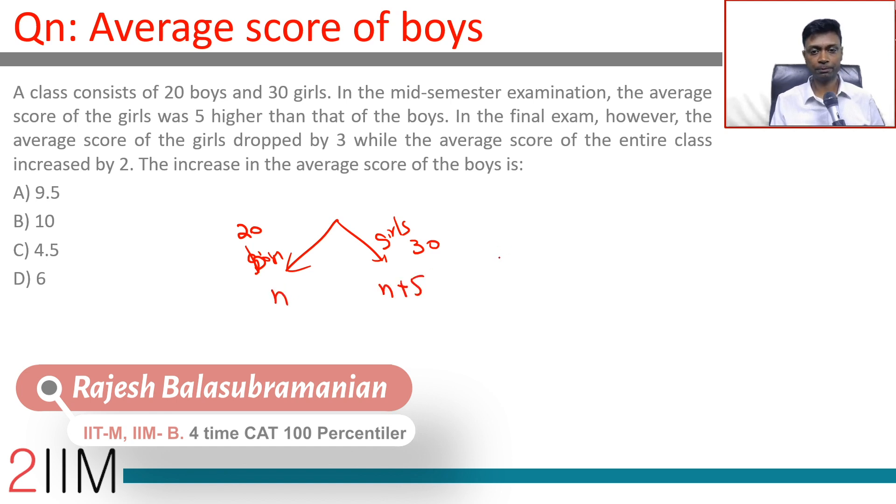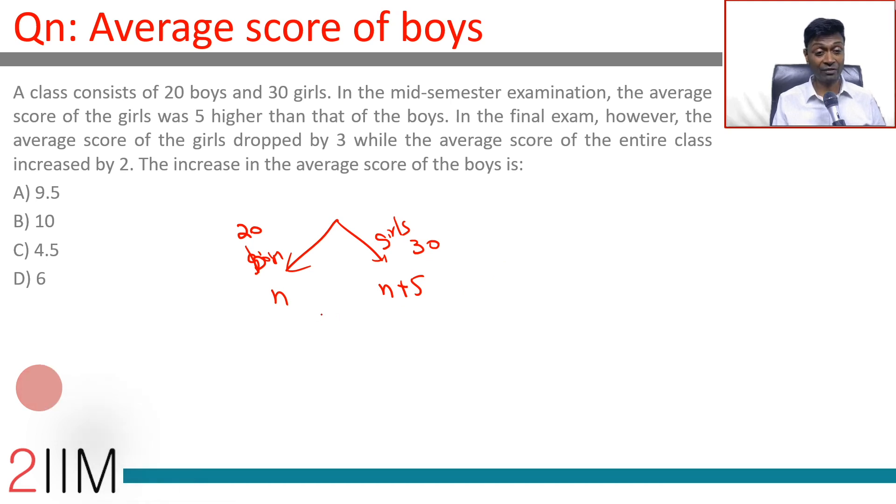That means the overall average—I already know this difference is 5—the overall average would have been n plus 3, closer to the girls than to the boys, split in the ratio 2 is to 3.